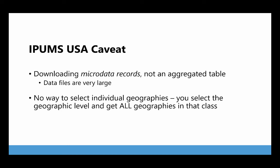Second, it's a blunt instrument. With the MDAT tool on the Census Bureau site, you're going to be able to select an individual PUMA. In IPUMS, you can't do that. You select a specific geographic level, but then it gives you all of the geographies in that class - and when I say all the geographies, I mean the whole country, not even just the state. So be prepared for that.